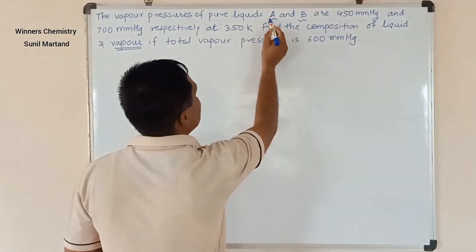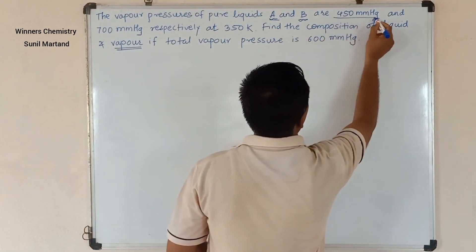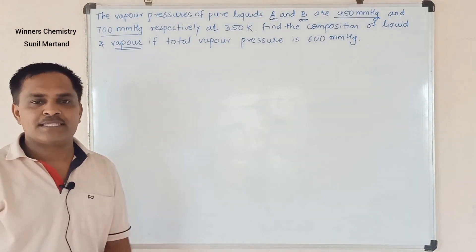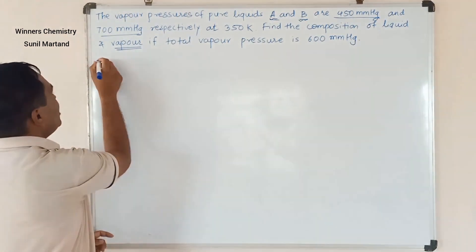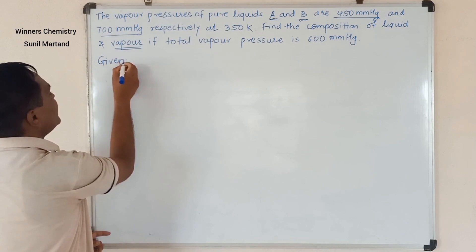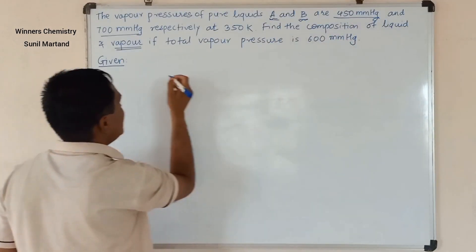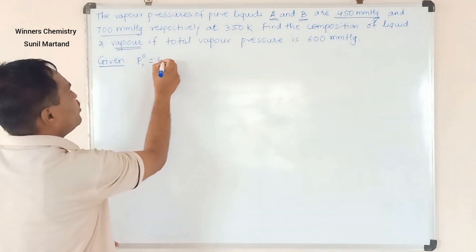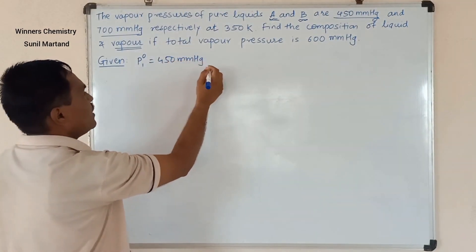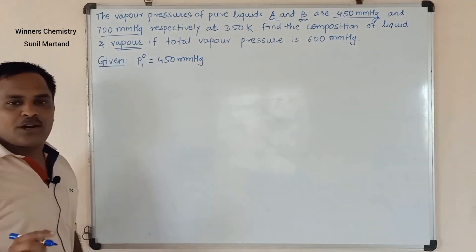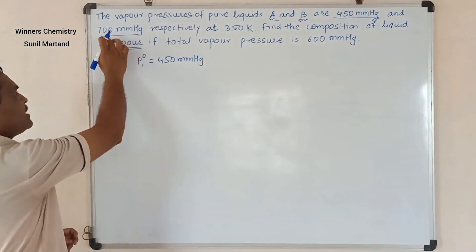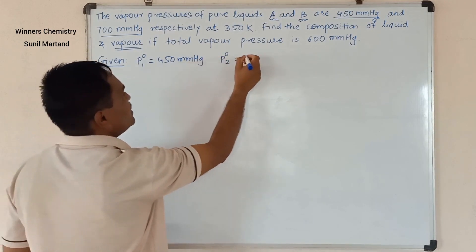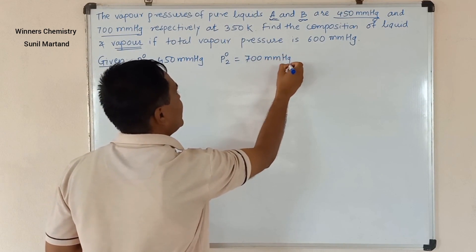The vapour pressure of pure liquids A and B are 450 mmHg and 700 mmHg respectively. We have two pure liquids — component 1 (A) with P°1 equal to 450 mmHg, and component 2 (B) with P°2 equal to 700 mmHg.